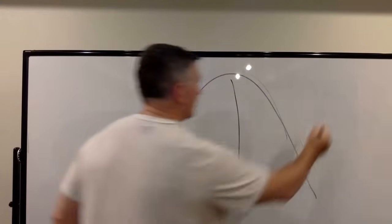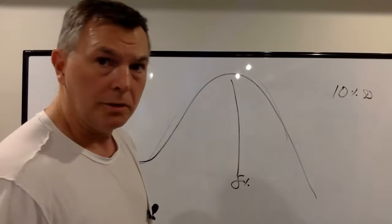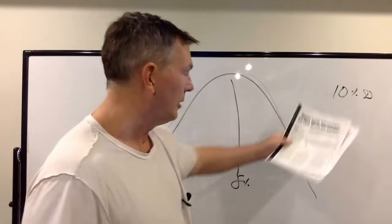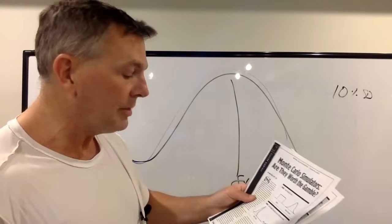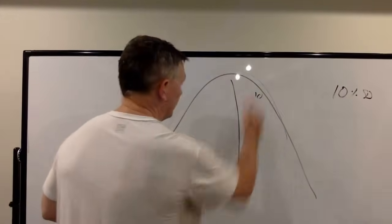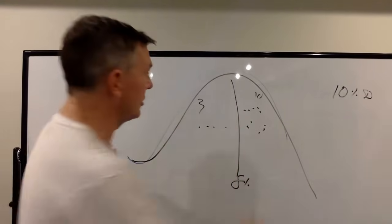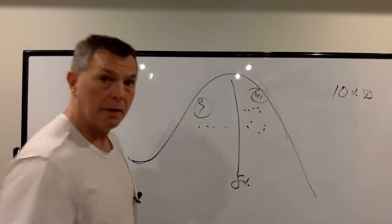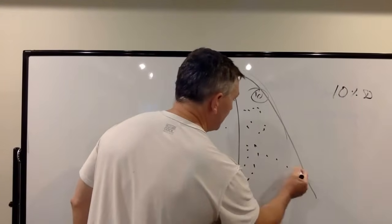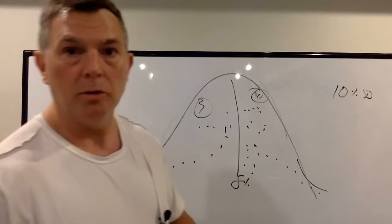We're going to assume an 8% growth rate and a 10% standard deviation for simplicity. With a normal distribution, if the baseline is 8% and the standard deviation is 10, then a 10% growth rate projection is forecast more often than a 3% growth rate projection because 10% is closer to the median. You get more frequency near the center and less as you go further out. That's your basic Monte Carlo bell curve.